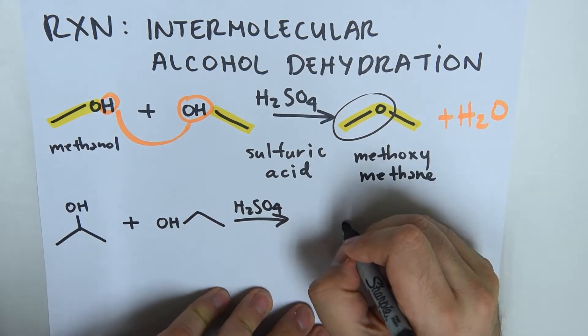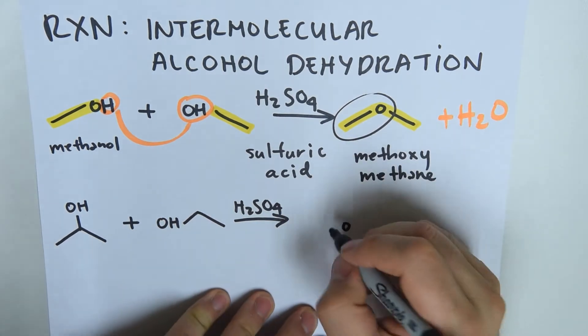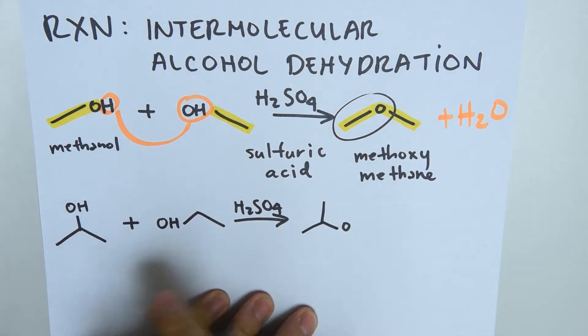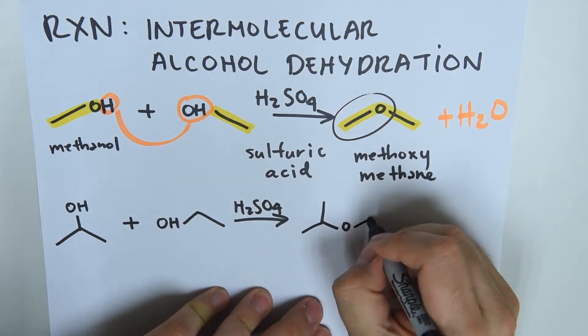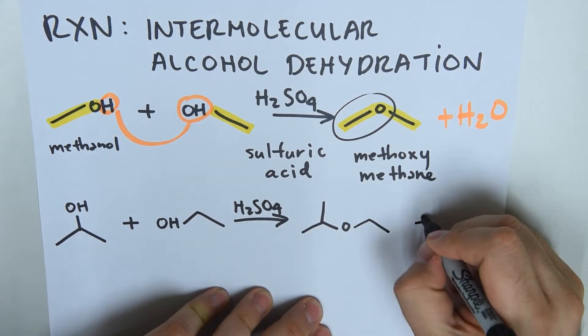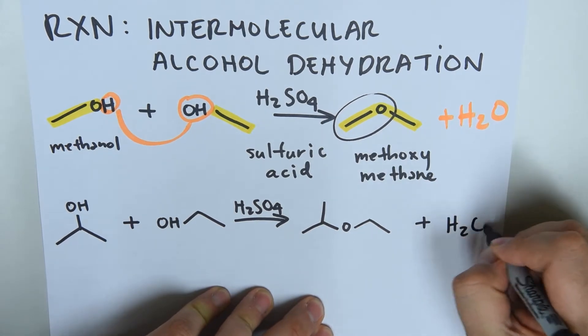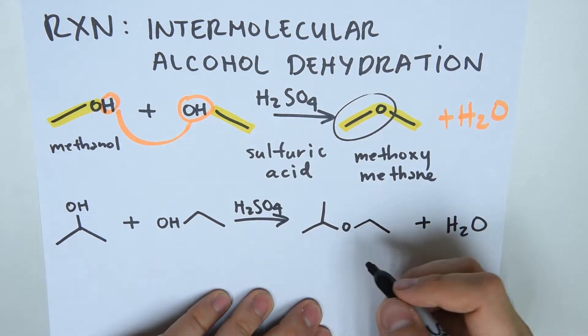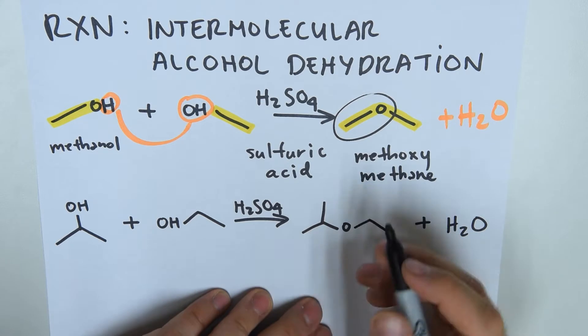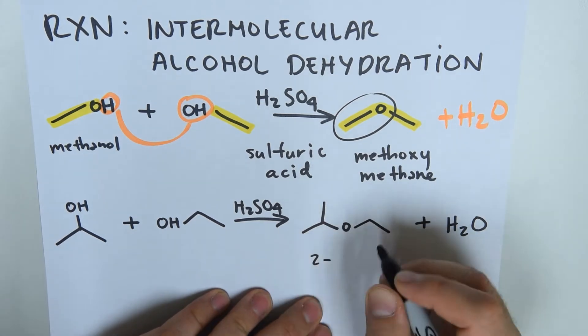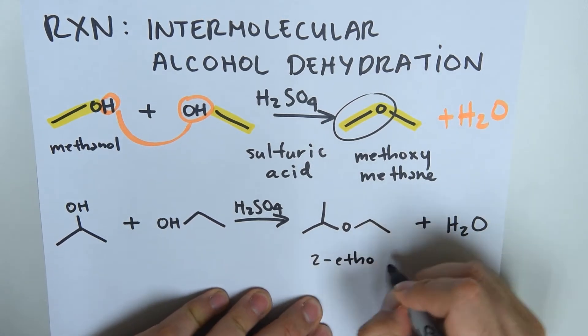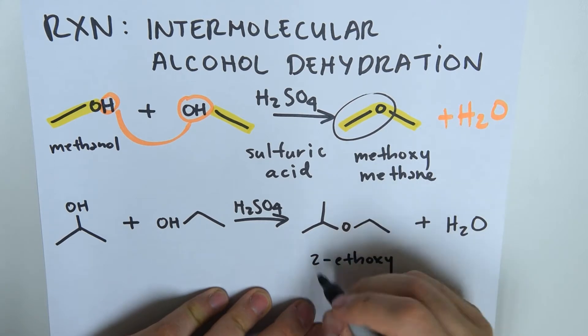We're going to get an oxygen in the middle separating this isopropyl shape on one side, and on the other side we have this chain, plus the water we obtained from the dehydration. What is this called? We find the longest chain. This is 2-ethoxy propane.